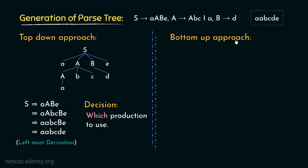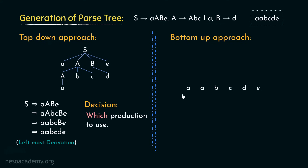Now let's observe the bottom-up approach. In the bottom-up approach, as the name suggests, we start off with the string itself. If you observe the production rules, we generally say the left-hand side can be rewritten as the right-hand side. But alternatively, we can also say the right-hand side can be reduced to the left-hand side — that is, the terminal d can be reduced to the non-terminal B. Using this logic, the bottom-up approach works.